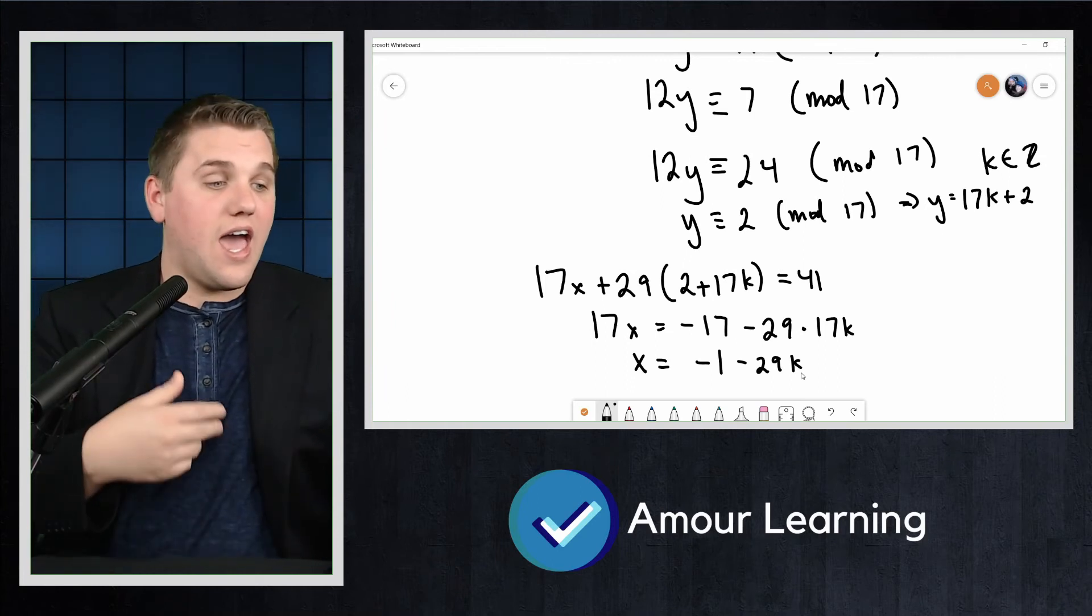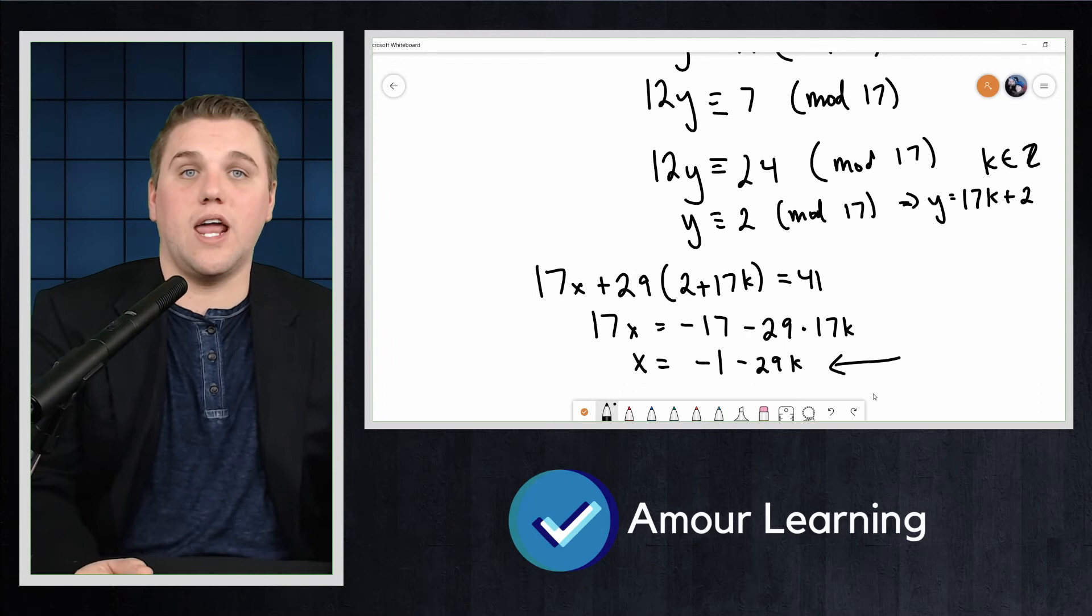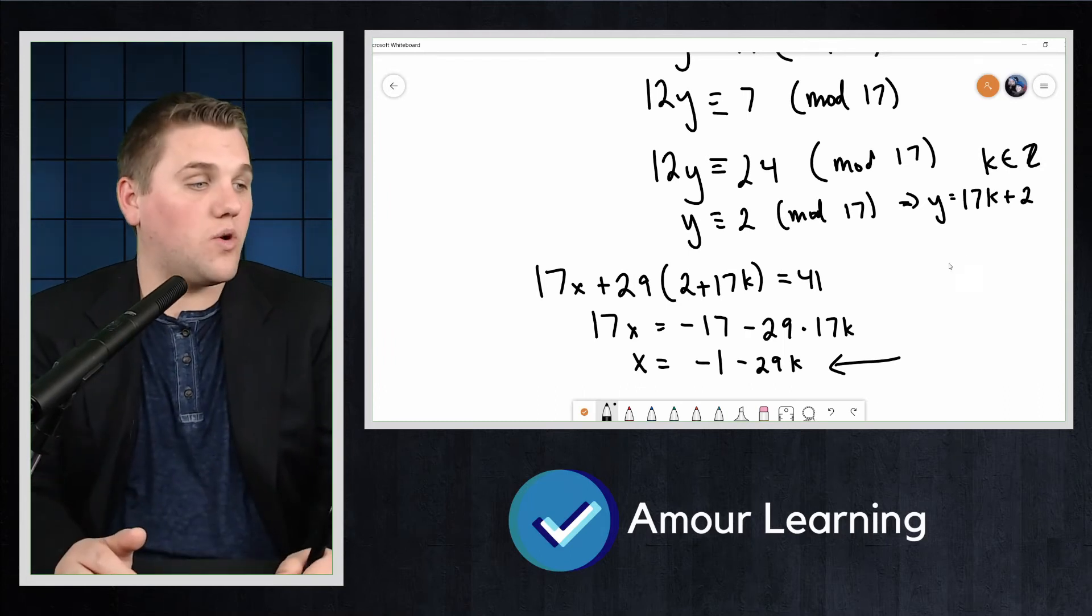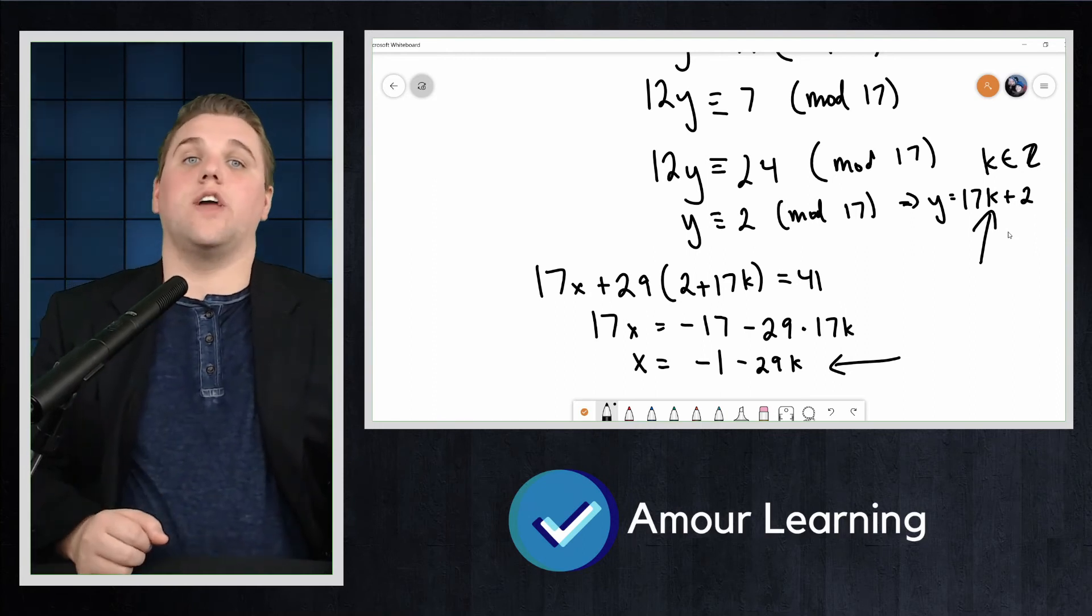We have now found all solutions to the Diophantine equation. For each k, x = -1 - 29k and y = 17k + 2 will satisfy the equation.